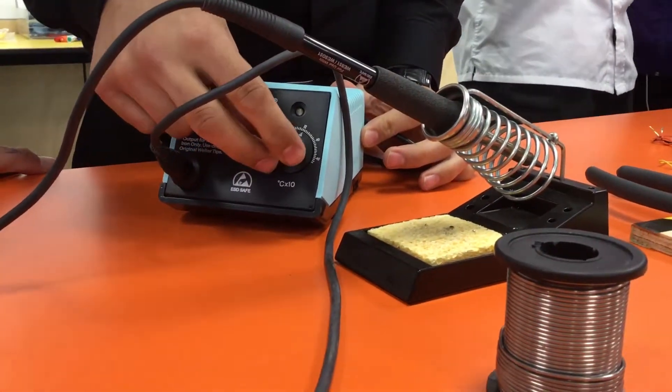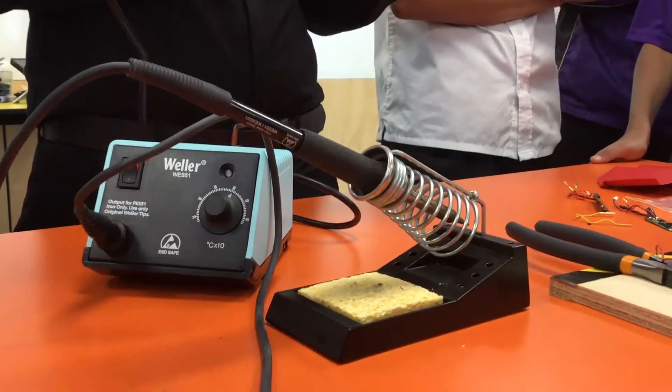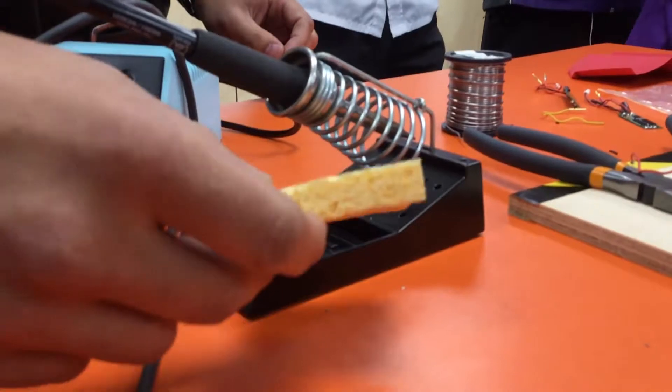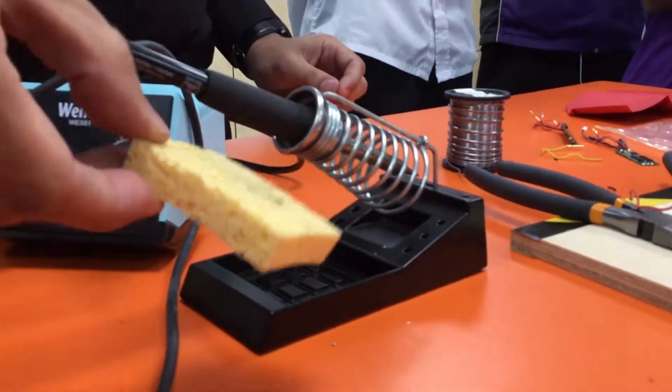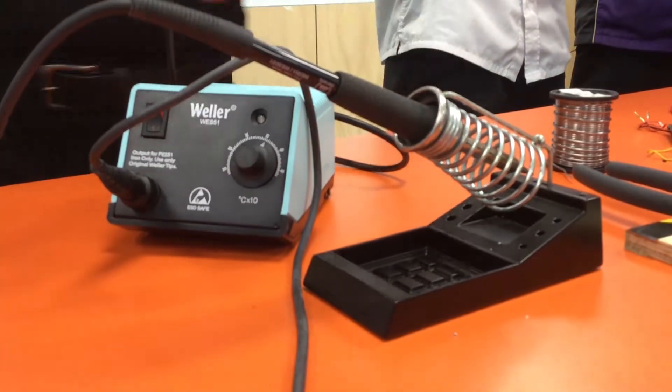The temperature somewhere between 350 is probably good for this solder. While the soldering iron is heating up, this is your sponge for cleaning the soldering iron tip. If the sponge is dry, the soldering iron will just melt it. So I'm going to go put some water on.